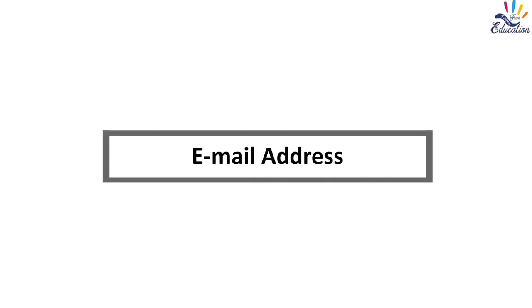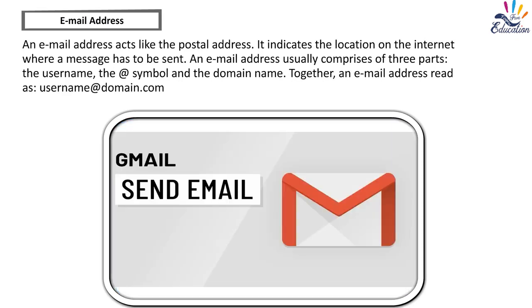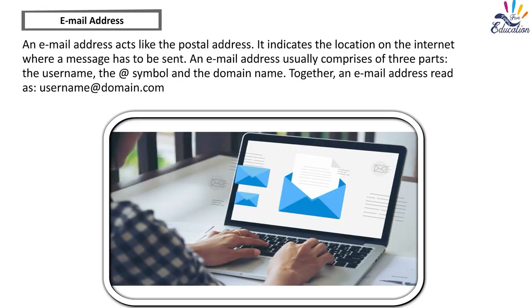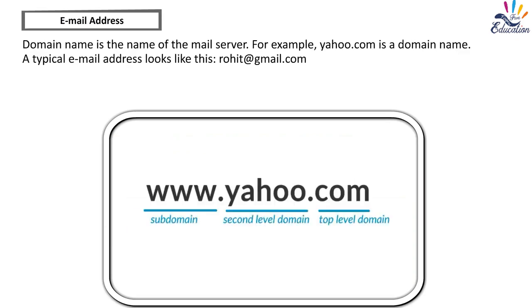An email address acts like a postal address — it indicates the location on the internet where a message has to be sent. An email address usually comprises three parts: the username, the at-the-rate symbol (@), and the domain name. Together, an email address is read as username@domain.com. The domain name is the name of the mail server. For example, yahoo.com is a domain name. A typical email address looks like: rohit@gmail.com.